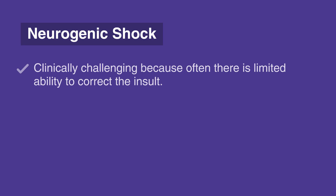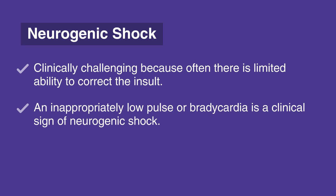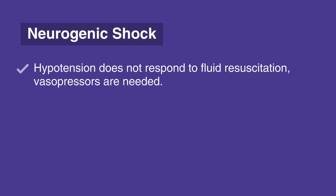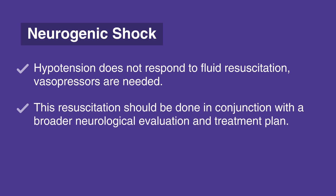Neurogenic shock is clinically challenging because often there is limited ability to correct the insult. Injury to the autonomic pathways in the spinal cord results in decreased systemic vascular resistance and hypotension. An inappropriately low pulse or bradycardia is a clinical sign of neurogenic shock. Therefore, treatment is focused on fluids first. Administer 20 milliliters per kilogram bolus over 5 to 10 minutes, then reassess the individual for a response. If hypotension does not respond to fluid resuscitation, vasopressors are needed. This resuscitation should be done in conjunction with a broader neurological evaluation and treatment plan.